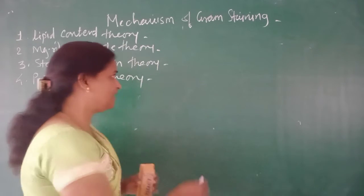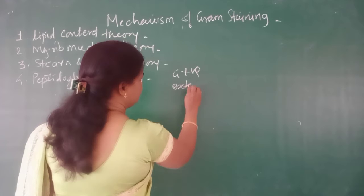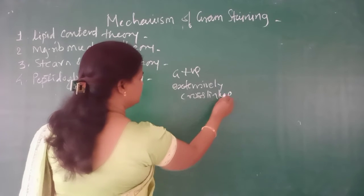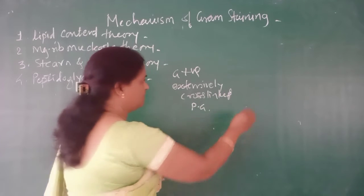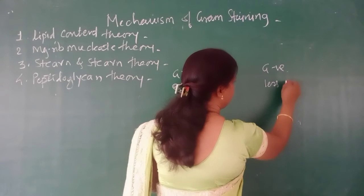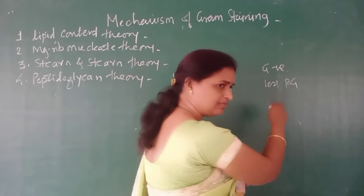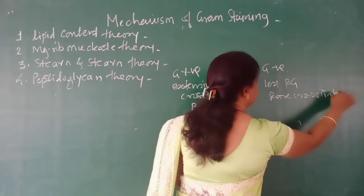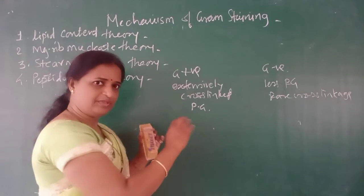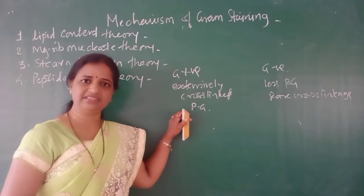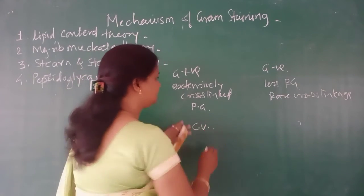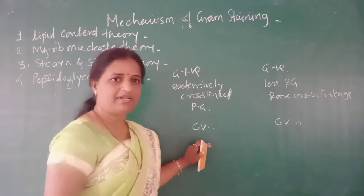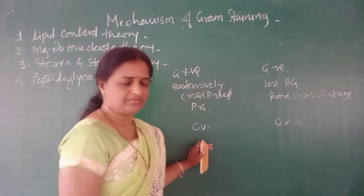So the basic difference is: in Gram positive bacteria, extensively cross-linked peptidoglycan is present in the cell wall. In Gram negative bacteria, there is less peptidoglycan and rare cross-linking. Because of this difference, when you apply the first stain of Gram staining — crystal violet — both Gram positive and Gram negative bacteria become violet.